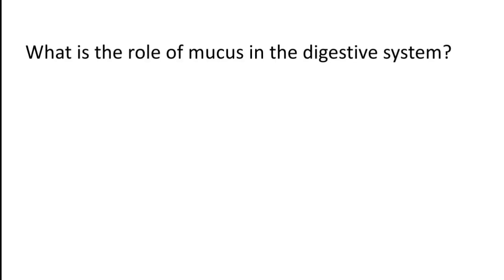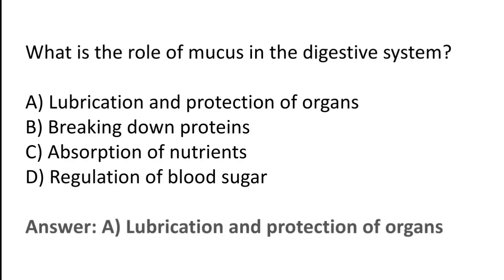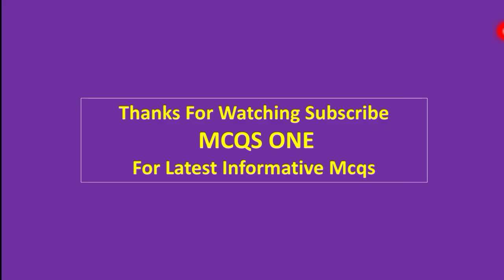What is the role of mucus in the digestive system? Option A: Lubrication and protection of organs. Option B: Breaking down proteins. Option C: Absorption of nutrients. Option D: Regulation of blood sugar. The correct answer is Option A — the role of mucus in the digestive system is lubrication and protection of organs. Thanks for watching — subscribe to MCQ1 for the latest informative MCQ. See you next time.